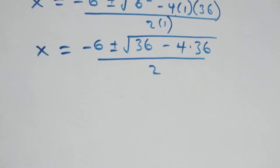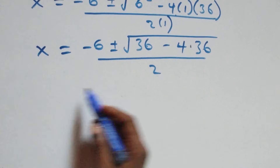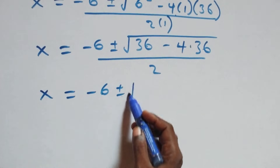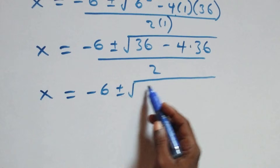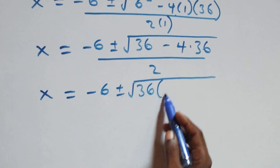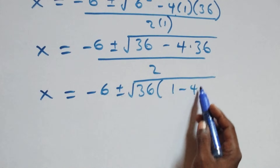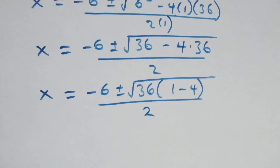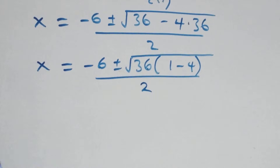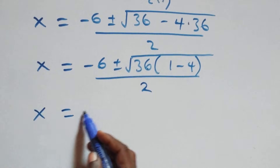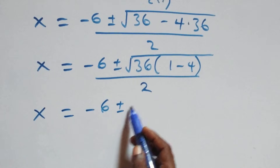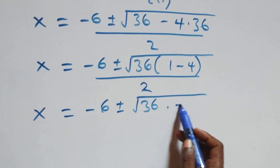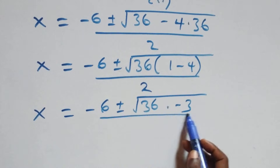This becomes x equals minus 6 plus or minus square root of 36 times (1 minus 4), all over 2, which implies x equals minus 6 plus or minus square root of 36 times (negative 3), all over 2.